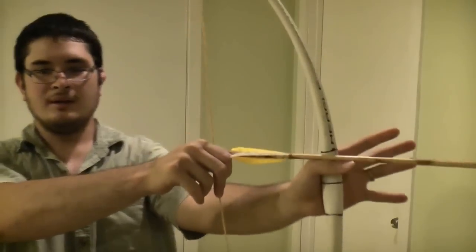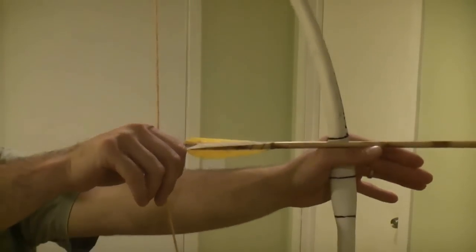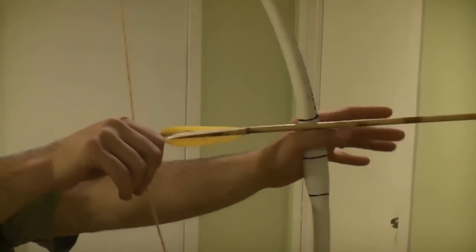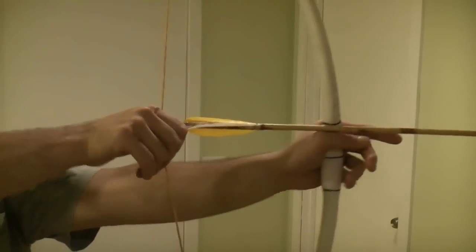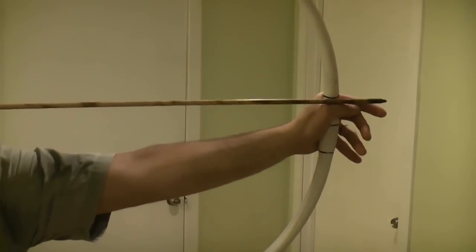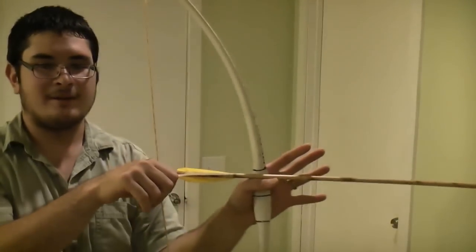So, basically, you want to mainly hold the bow right here with your thumb, with it resting on top of your thumb. And you just want to draw back. So, there are many different variations on this, this is just my method.